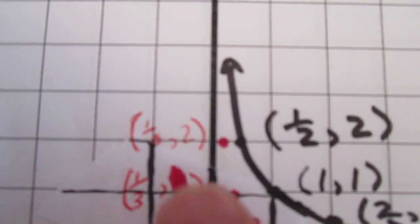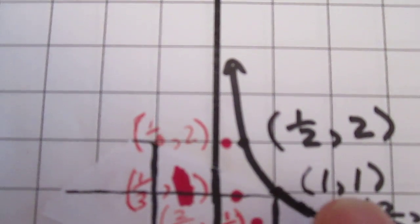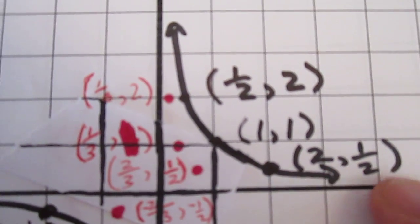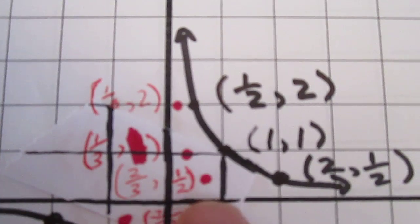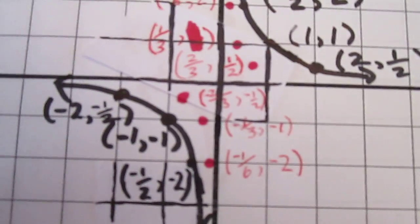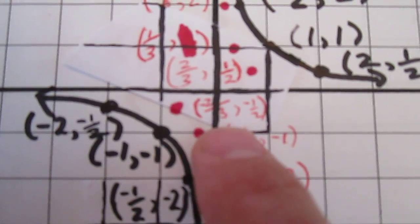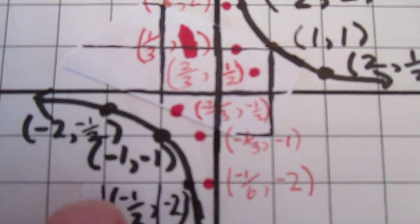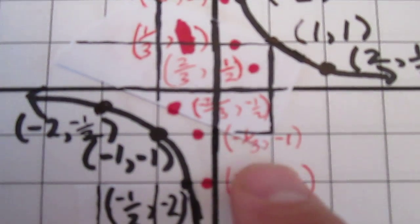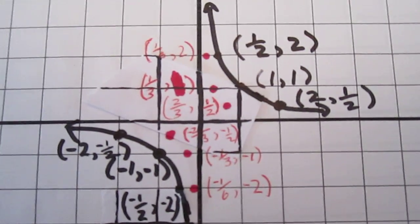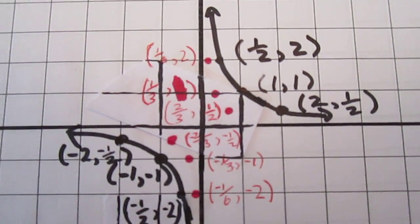So, 1 half comma 2 became 1 sixth comma 2 — very difficult to read. 1 comma 1 became 1 third comma 1. 2 comma 1 half became 2 thirds comma 1 half. We now have 3 new points here. Similarly, negative 2 comma negative 1 half became negative 2 thirds comma negative 1 half. Negative 1 comma negative 1 became negative 1 third comma negative 1. And negative 1 half comma negative 2 became negative 1 sixth comma negative 2. All we did was multiply every x-coordinate by 1 third.